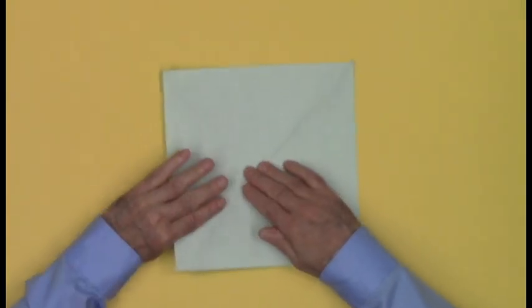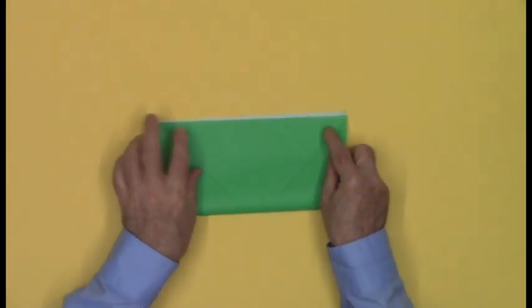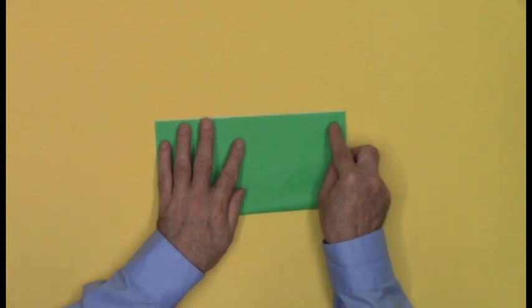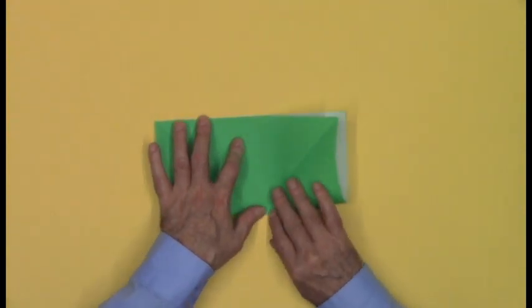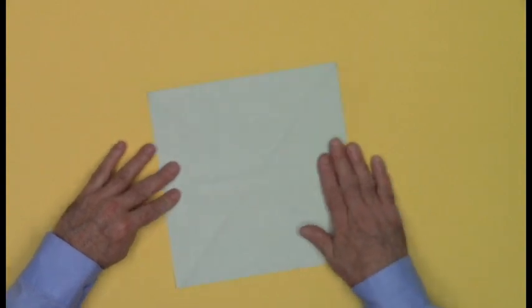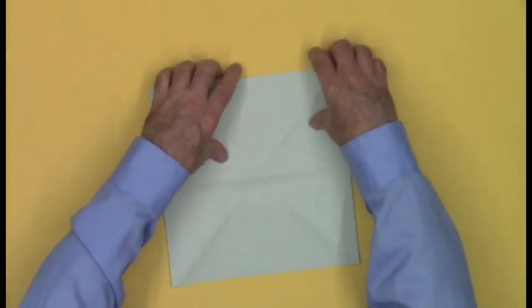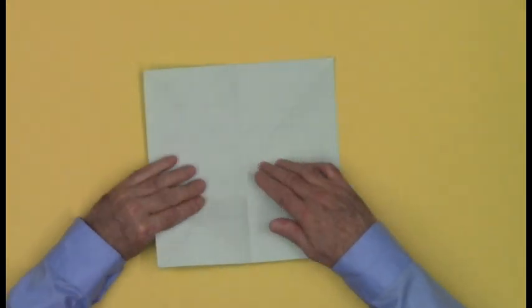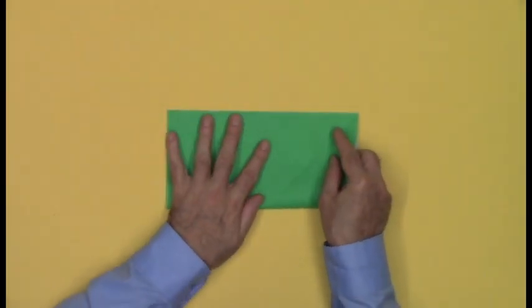Turn the paper over, fold in half edge to edge. Unfold. Fold in half edge to edge the other way, but leave the paper folded in half.